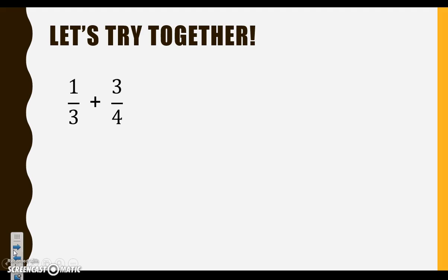Let's try this first one together. We're going to take a look at our denominators. We have a 3 and a 4. Those are not common denominators, but not to worry — we know how to get them to have the same denominator. The first thing we want to do is list our multiples.